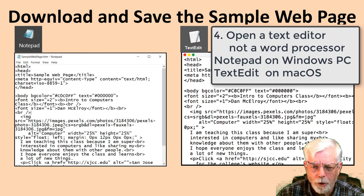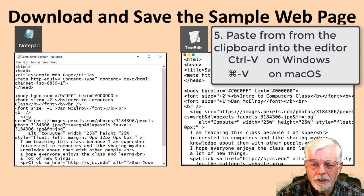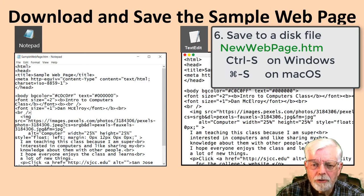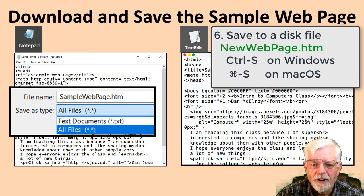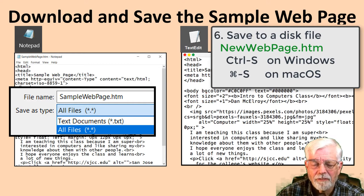Step 4: open a text editor, not a word processor. Use Notepad on a Windows PC or TextEdit on Mac OS. Step 5: paste the code into the text editor. Step 6: don't close the file yet, but save it to your disk with CTRL-S on Windows or CMD-S on Mac OS. When saving the file with Notepad, be sure to select the save as type to all files, or Notepad will append .txt to the end of the file name. Save the file with the name NewWebPage.htm.